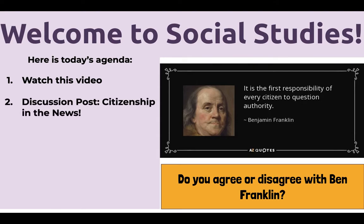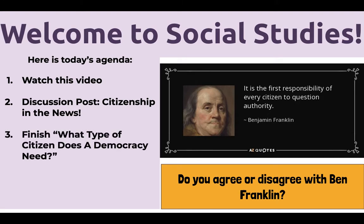Step two, you're going to work on a discussion post in Schoology right below this video and set of directions. It's called Citizenship in the News. And then step three, you are going to finish the activity from yesterday that I gave you in paper form — 'What type of citizen does a democracy need?' You have to finish the create your own colony portion at the end and then submit it.